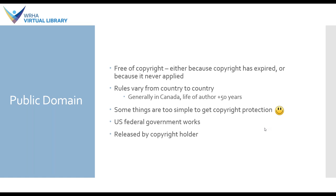Next, we come to images that are in the public domain. Public domain is not just that something is public — you have to assume an image is copyrighted unless you can determine otherwise. Public domain means free of copyright, either because the copyright has expired or because there was never copyright applied to the work in the first place. Generally in Canada, it is the life of the author plus 50 years — meaning if somebody made a photograph or painting and then died, and then 50 years have passed since their death, that image is now in the public domain and you can use it without requiring any permission.